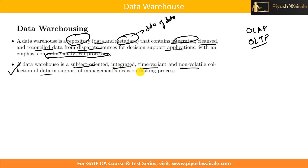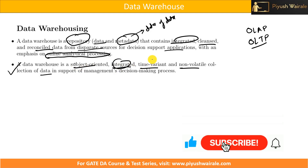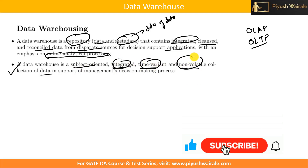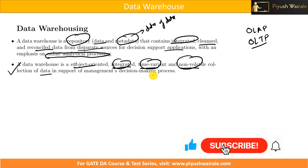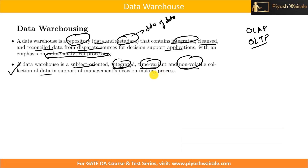A data warehouse is subject-oriented, integrated, time-variant, and non-volatile — these are its four key characteristics. The explanation of each — subject-oriented, integrated, time-variant, and non-volatile — has been added in the notes, so you can go through that. I hope you understand the concept of data warehouse. In the next lecture, we will discuss the concept of data lake. Thank you.